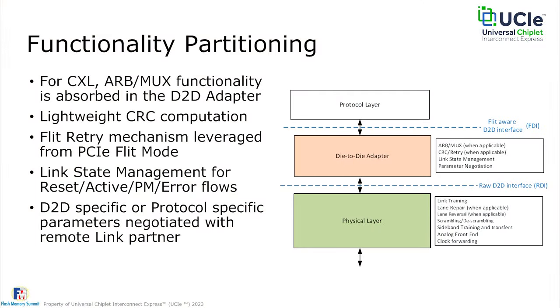Any CRC failure triggers a FLIT replay mechanism, leveraged from the PCIe FLIT mode with simplifications appropriate for a die-to-die link. Because round-trip latencies are so small — two to three nanoseconds in one direction — the main simplification is omitting the selective NAK feature from PCIe, so any replay error triggers a full replay. Given the extremely low error probability, a typical link might see a retry only once every several hours, making the simplest retry mechanism perfectly adequate.